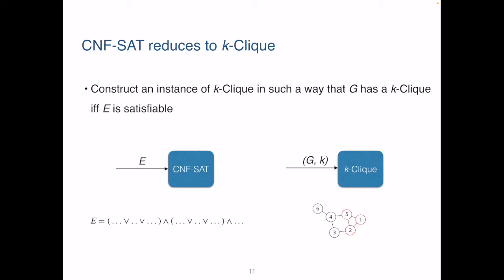Can we relate setting one variable to true in each clause of E, to finding k vertices, all of which are adjacent?